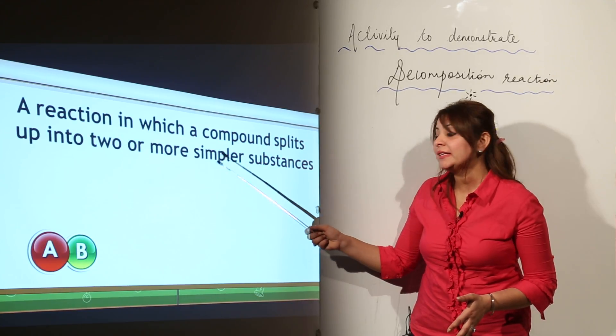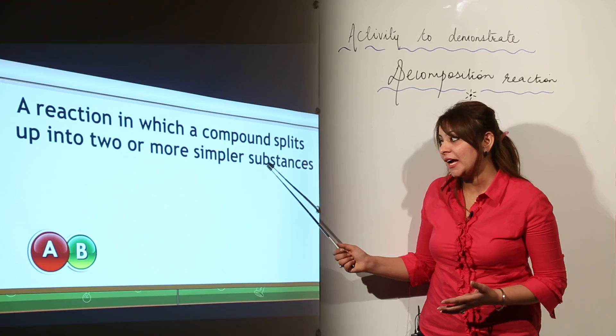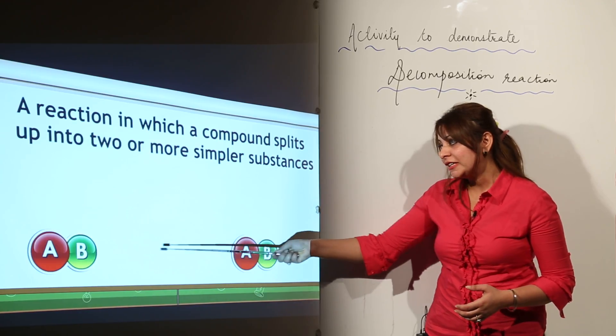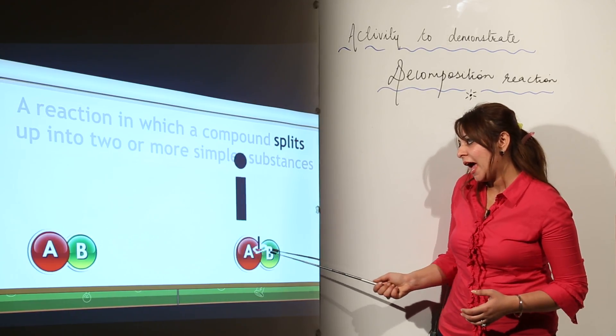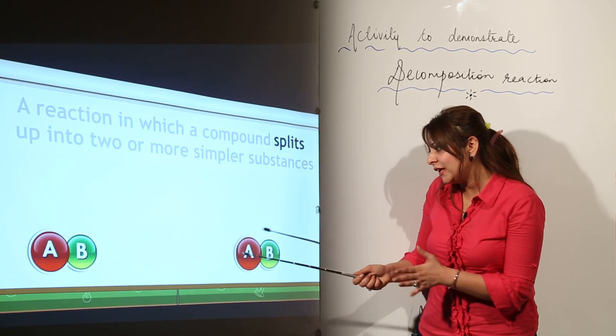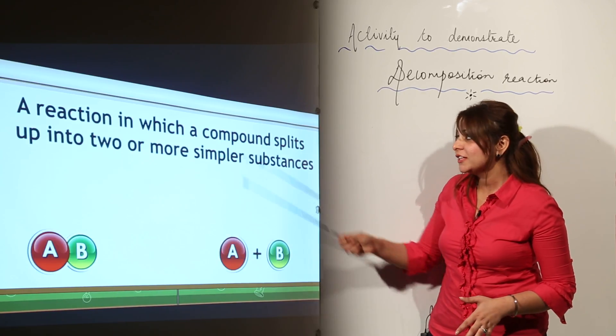Suppose we have a compound AB, it splits into A and B which get separated. This is the decomposition reaction.